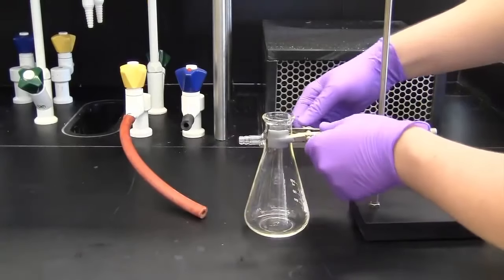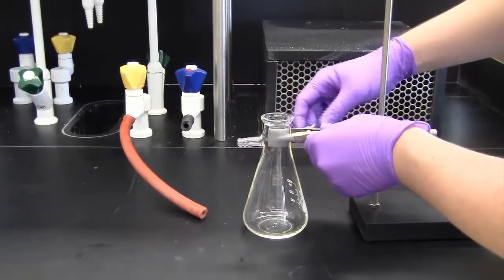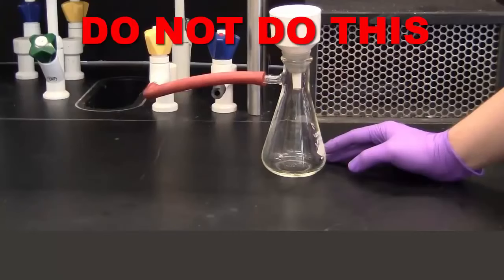First, clamp the flask to a ring stand. This will prevent the vacuum hose from tipping over the filtration setup.